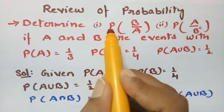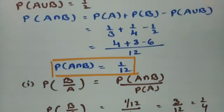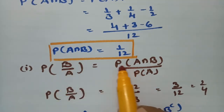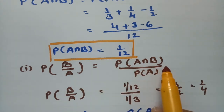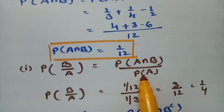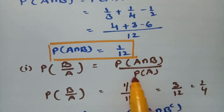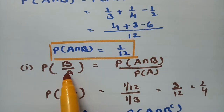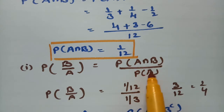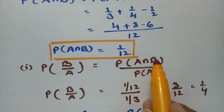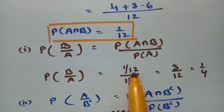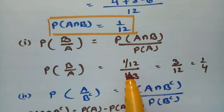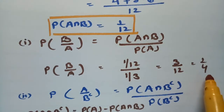Now the first question: find the probability of B given A. From the conditional probability formula, P(B|A) = P(A∩B) / P(A). P(A∩B) is 1/12 and P(A) is 1/3. Simplifying, (1/12) ÷ (1/3) = 3/12, which equals 1/4. Therefore, P(B|A) = 1/4.